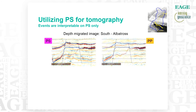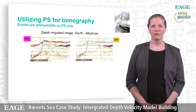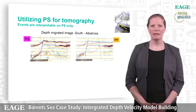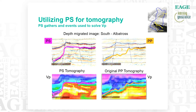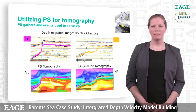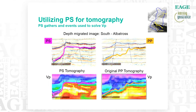We found that the PS gather flatness was useful for the VP velocity model update. First of all we started with the PP data and we have an interpretation shown on the right hand side that does not match the geology at all. When we got the PS data we could see that the events were really much shallower than we first thought. Then we used this framework together with the PS gathers on the left hand side to run the tomography. On the right hand side is the original result driven by the PP gather flatness and the PP interpretations. We clearly see that the PS framework is important in the velocity model building update.